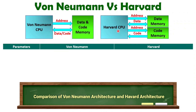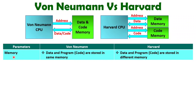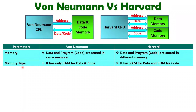Now I will explain the comparison with respect to various parameters. When it comes to memory, Von Neumann architecture has common memory for data and code — code means program or instruction — stored in the same memory. With Harvard structure, data and program are stored in separate memories. When we talk about memory type, the common memory in Von Neumann should be RAM only, because while code is read-only, data may require read and write operations, making it bidirectional. So the main memory with Von Neumann CPU will be RAM. With Harvard CPU, you have two separate memories: data memory is RAM and code memory is ROM.